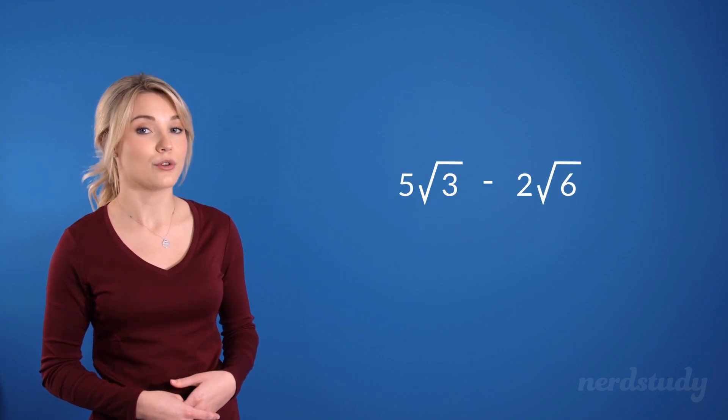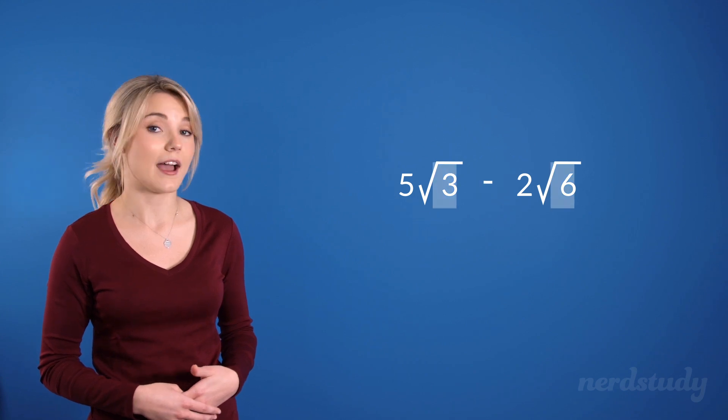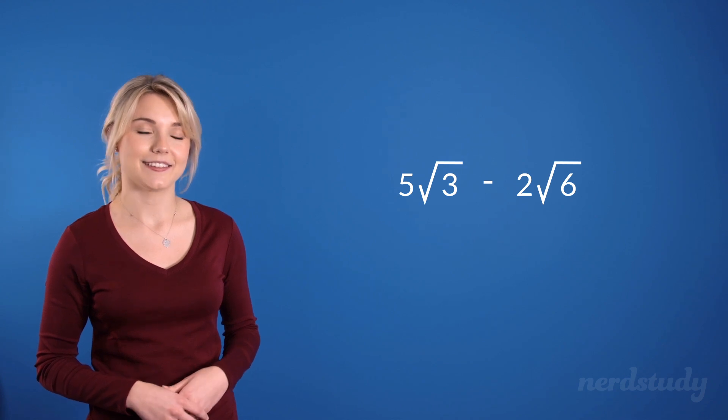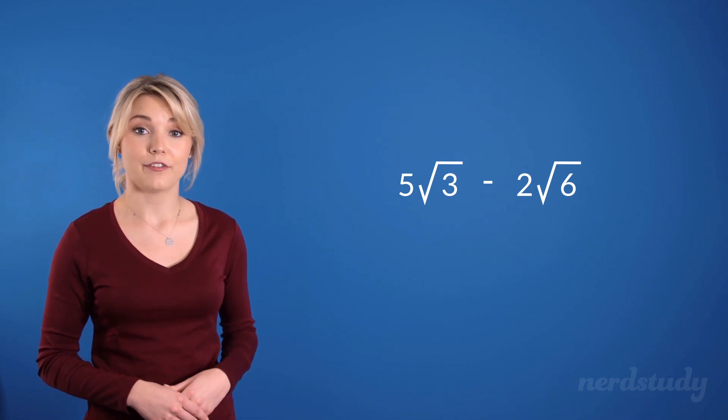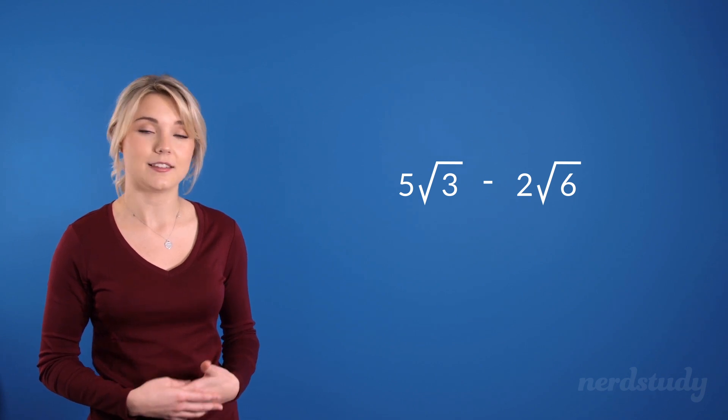But if we had something like 5 root 3 minus 2 root 6 we would not be able to add or subtract this since our radicand is completely different. What we can do however is this. We can sometimes simplify radicals and discover that radicands can actually be manipulated to be the same.